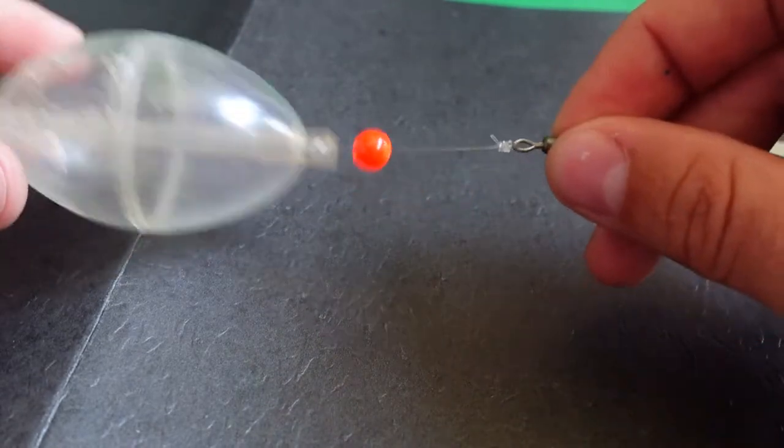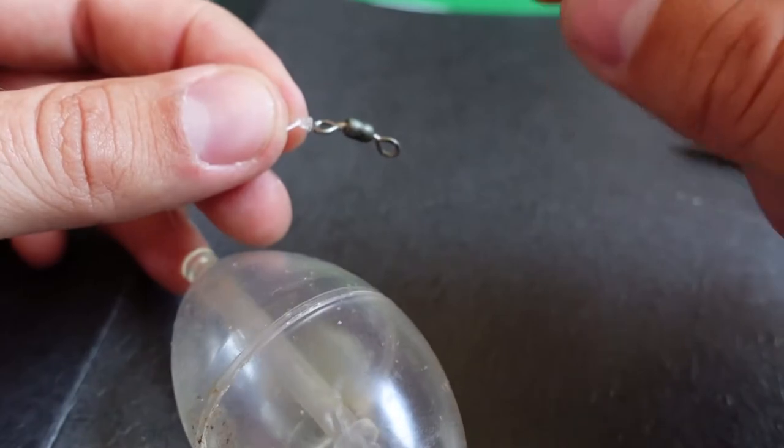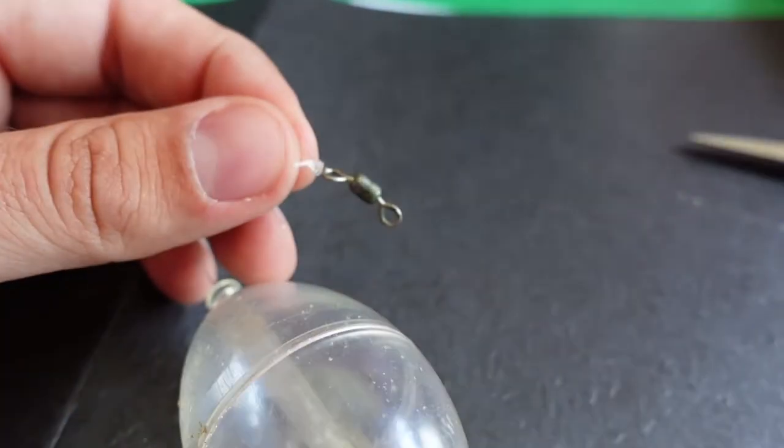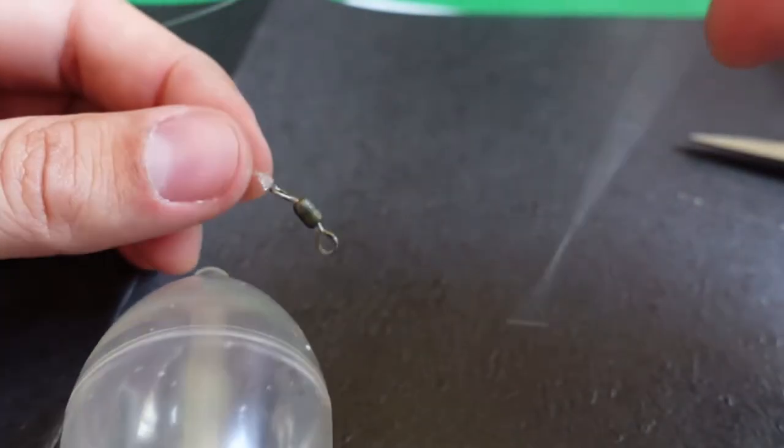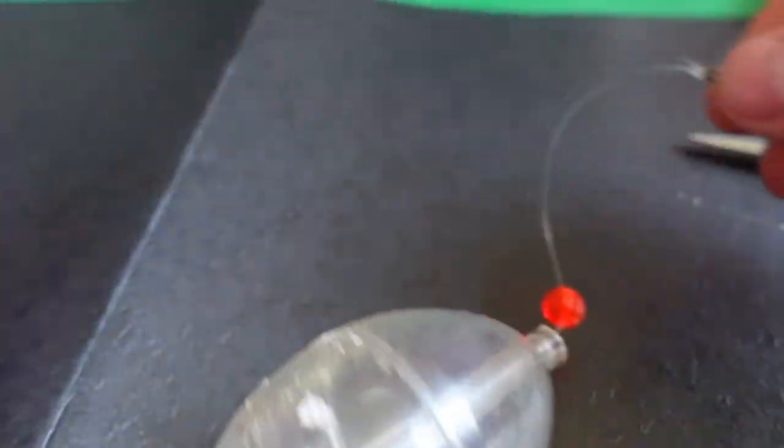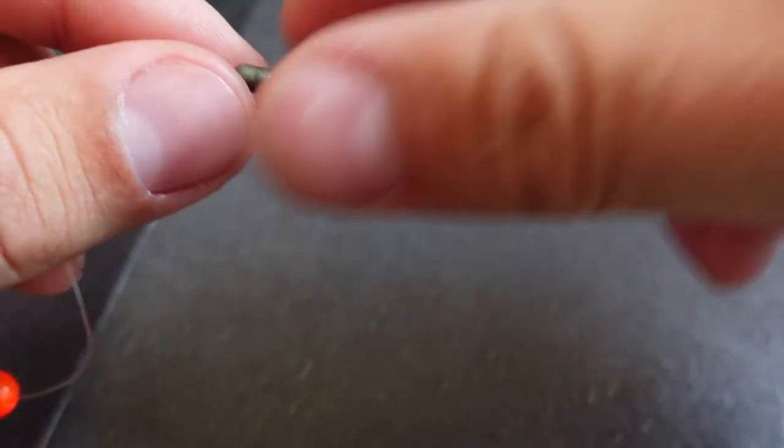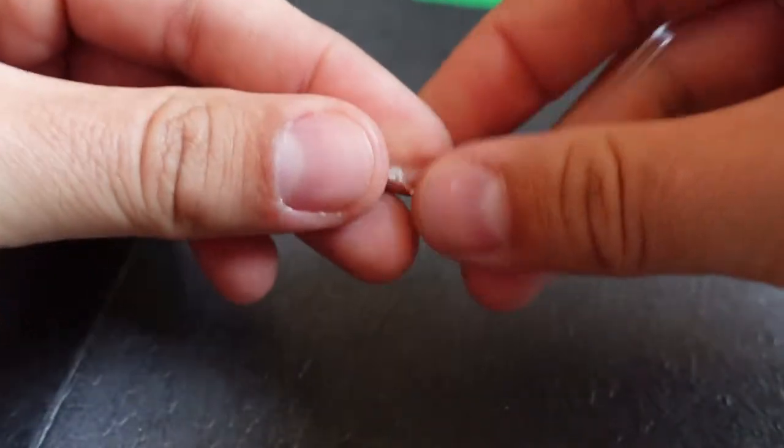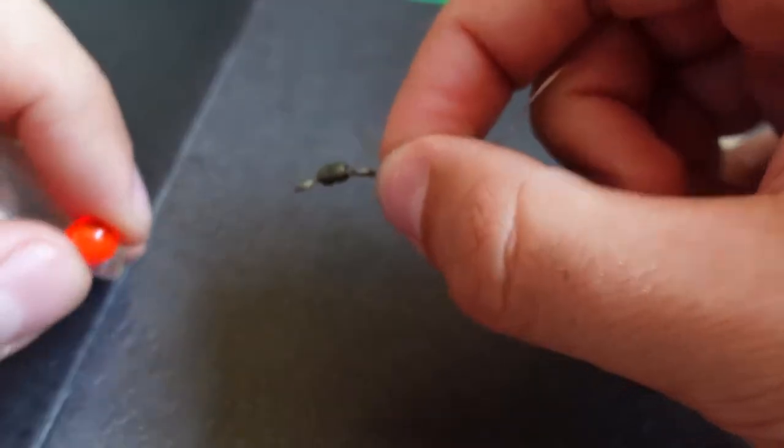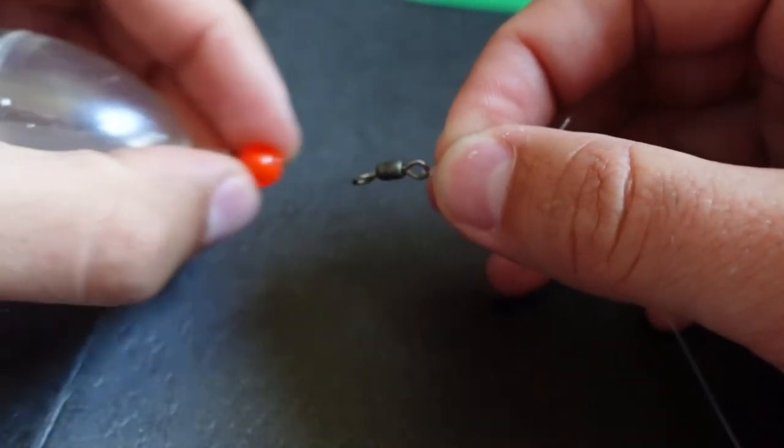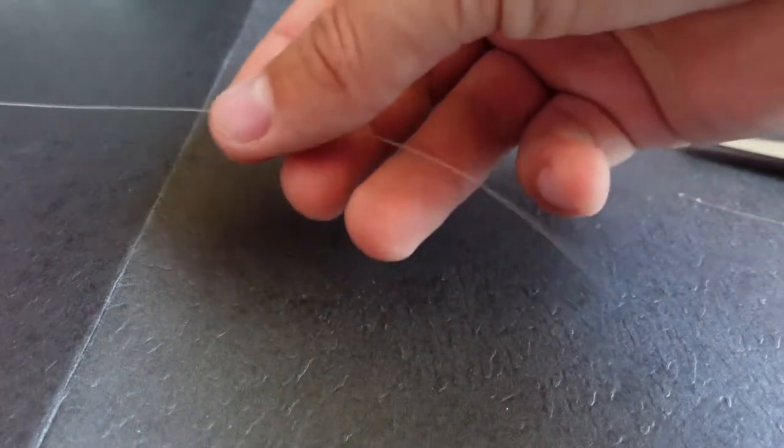Got the bead and the swivel. You would take this 25, 30 pound leader, right? And tie you a two, two and a half foot stretch of it to the other side here using another uni knot, right? So, we're going to kind of simulate that. And now you would have the swivel. This would sit here on your main line, just like this. It would slide up and down as you cast it. And now you'd have your leader.